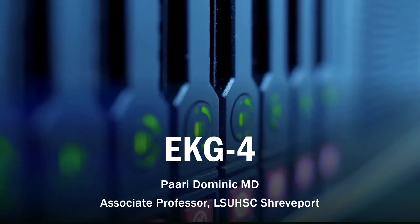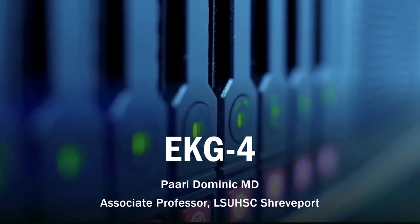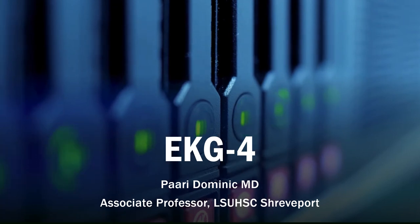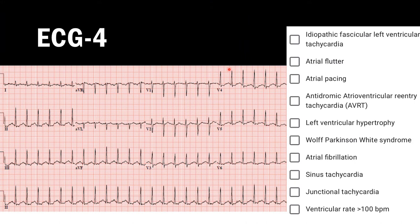This is the explanation for the 4th EKG of the EKG club. The purpose of this question is to identify a narrow complex tachycardia that is regular with identifiable discrete P waves in front of every QRS complex. Every P wave is followed by a QRS complex and every QRS complex is preceded by a P wave. Here are the answers to the question, which we're going to go over in the next few slides.